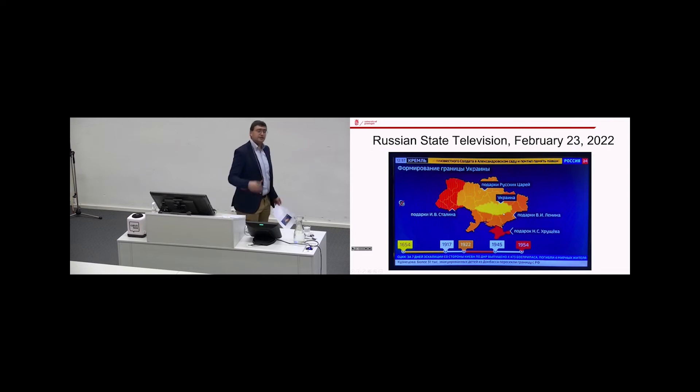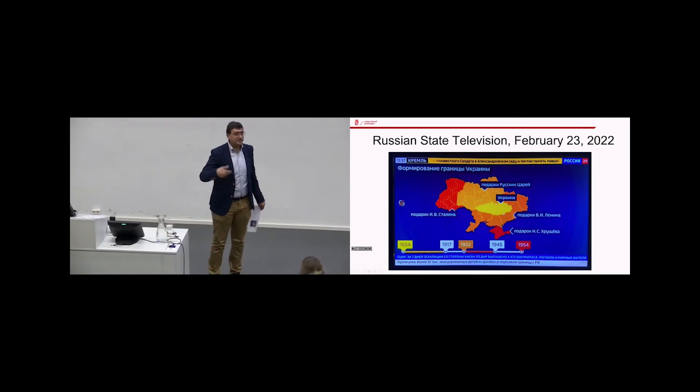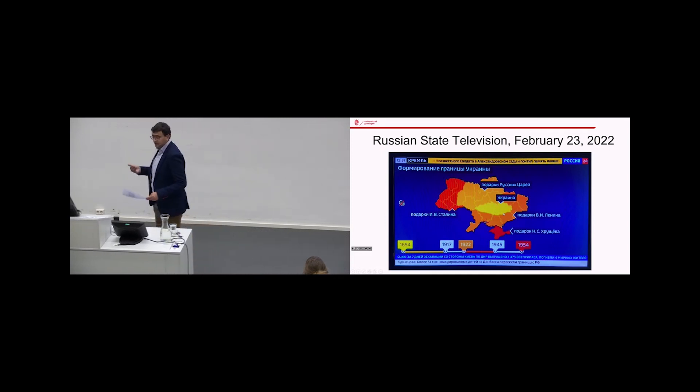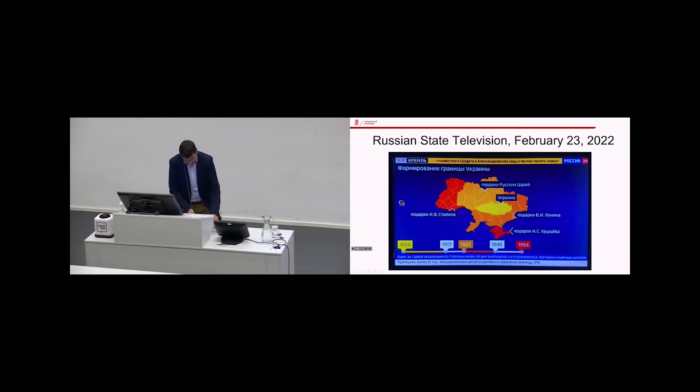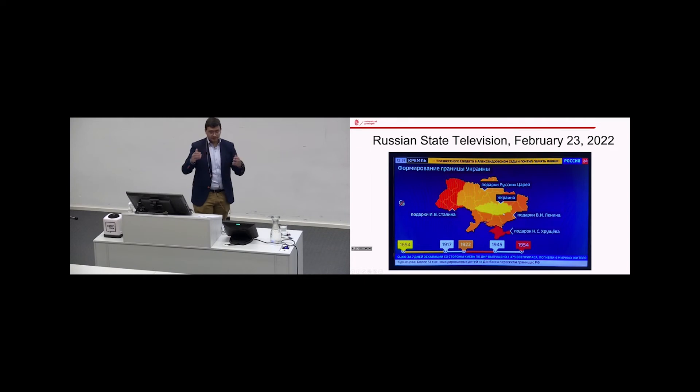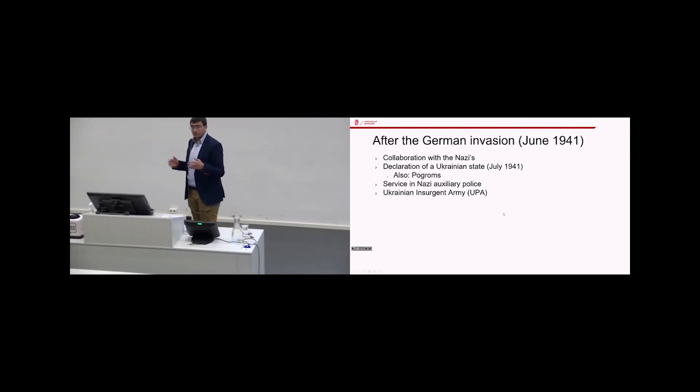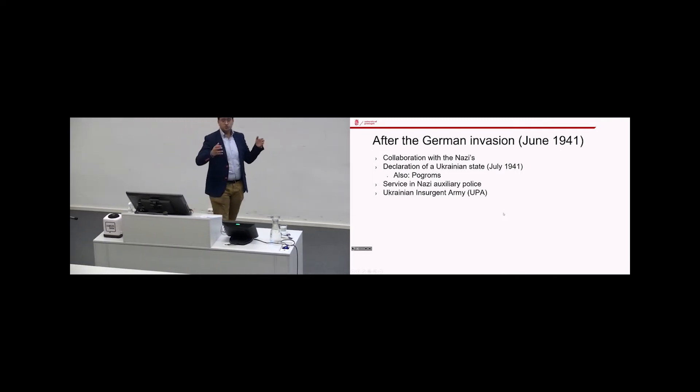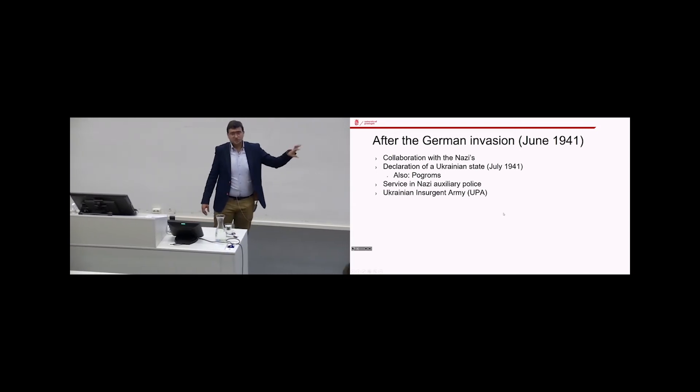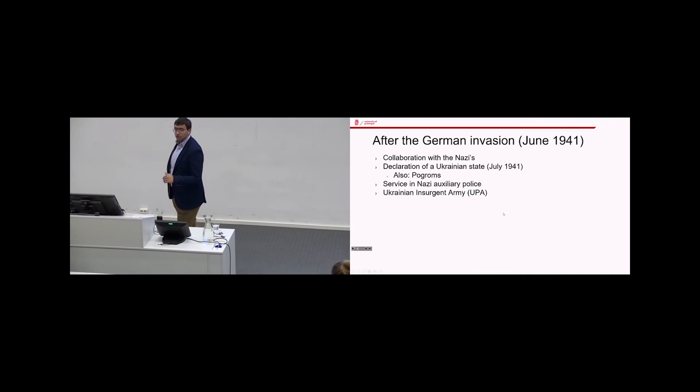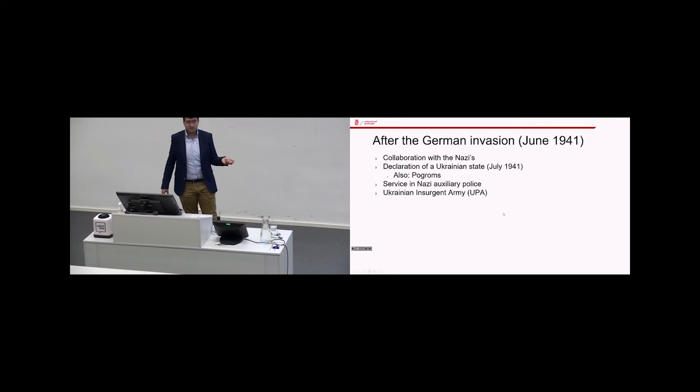Basically when Putin says I'll show you what real decommunization means, is basically you'll be left with this thing over here which is where the Cossacks were in the 17th century. The thing is from a Ukrainian perspective things look rather differently. There is such a thing as Ukrainian nationalism and there is a reasonable cause for a Ukrainian state. But their claims are as exclusive as the Russian claims. From a helicopter view things look very differently as we might have noticed. So during the war, especially after the Germans invade in June 1941, the Ukrainian nationalists start collaborating with the Nazis. And this is not a nice picture to look at. They declare a Ukrainian state in July 1941 and at that time there are pogroms against the Jewish population of Lviv at the same time when the state is declared.